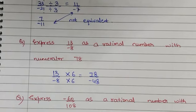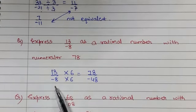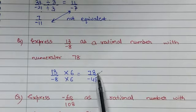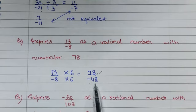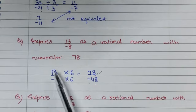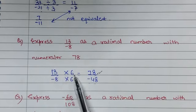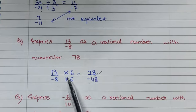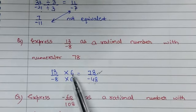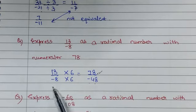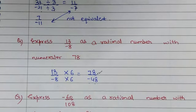Next question: express 13 upon minus 8 as a rational number with numerator 78. The numerator is given and we need to find the denominator. Since 13 multiplied by 6 equals 78, we multiply the denominator by 6 as well. Minus 8 into 6 gives minus 48. So the answer is 78 upon minus 48.